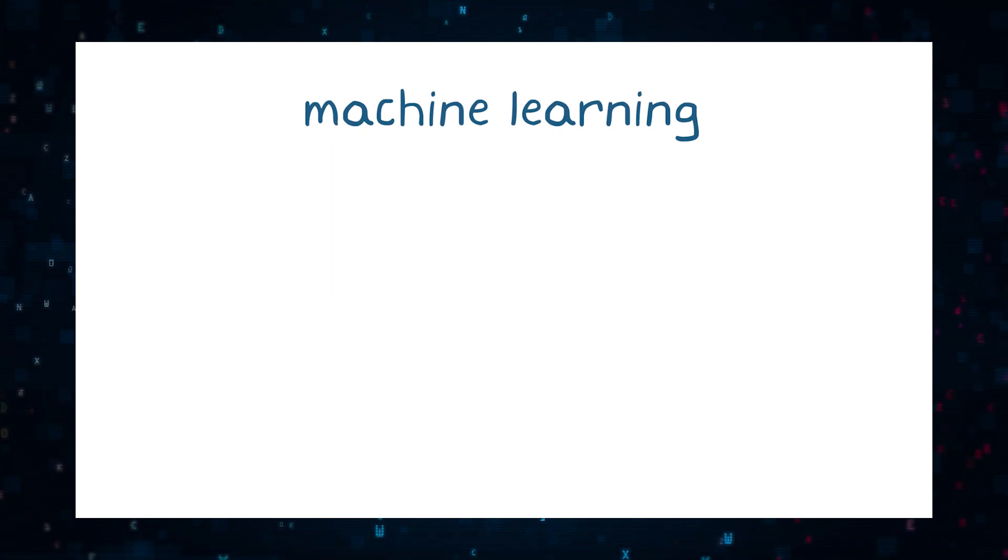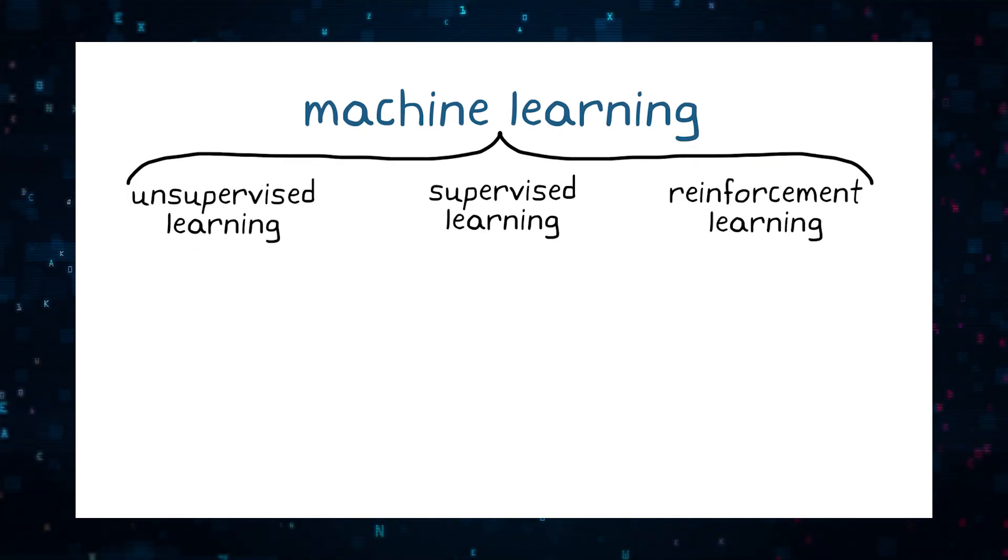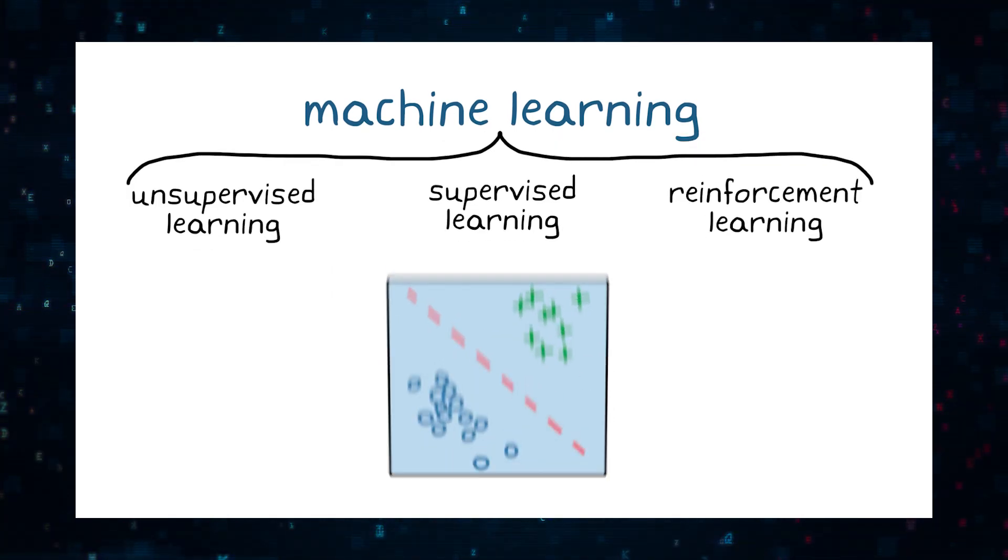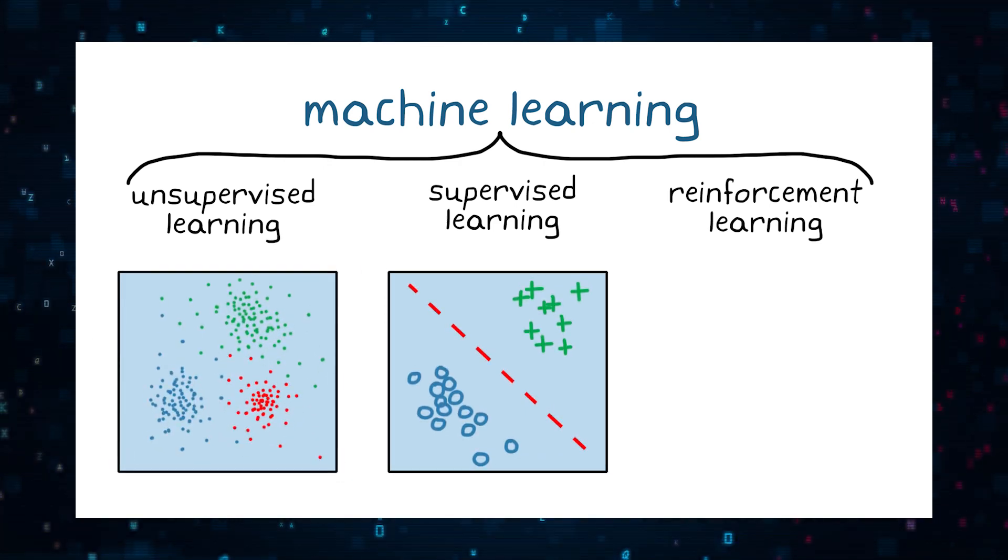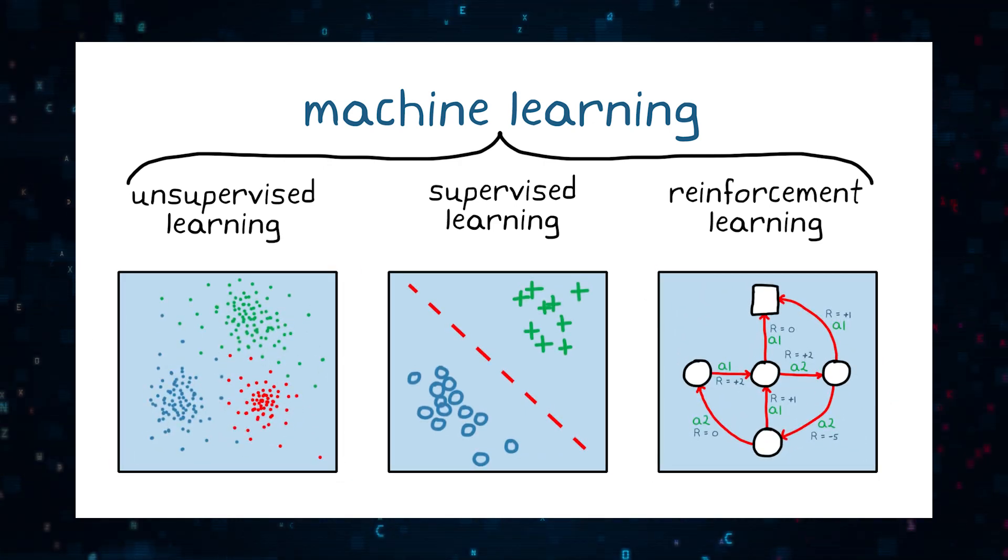When we talk about machine learning, we often categorize it into three major categories: supervised learning, unsupervised learning, and reinforcement learning.